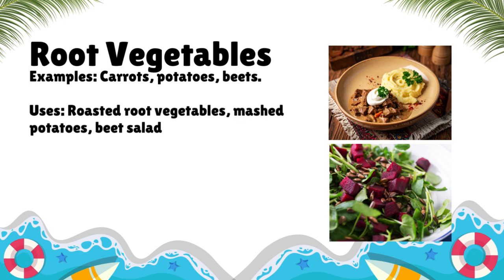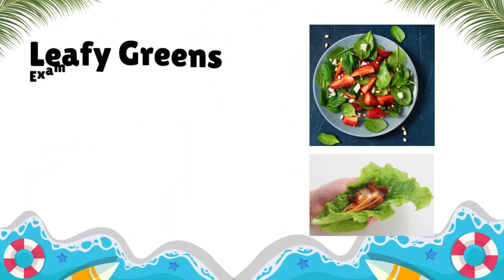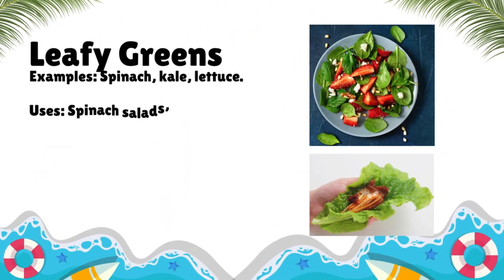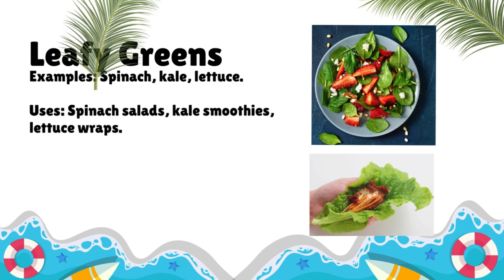Root vegetables — Examples: Carrots, potatoes, beets. Uses: Roasted root vegetables, mashed potatoes, beet salad. Leafy greens — Examples: Spinach, kale, lettuce. Uses: Spinach salads, kale smoothies, lettuce wraps.